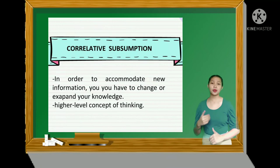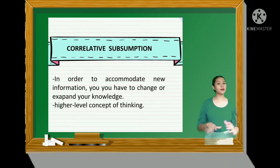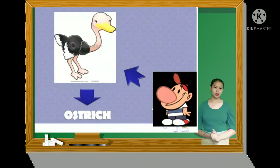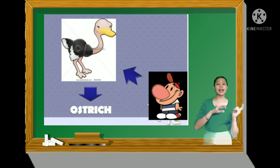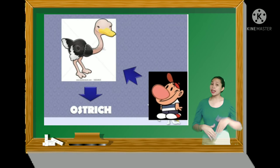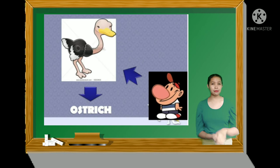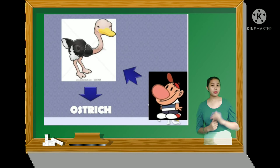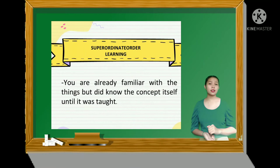The second process is correlative subsumption. This describes the accommodation of new information by changing or expanding a concept. For example, you've now seen a new kind of bird that has a really big body and long strong legs — it doesn't fly, but it can run fast. In order to accommodate this new information, you change or expand your concept of bird to include the possibility of having long legs. You now include your concept of an ostrich into your previous concept of what a bird is.